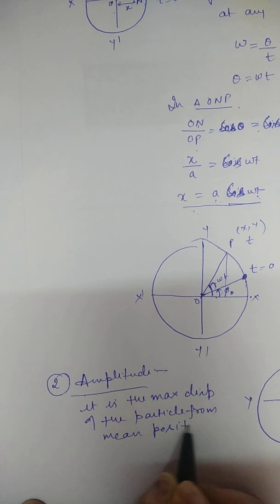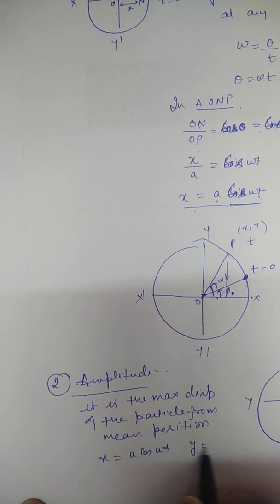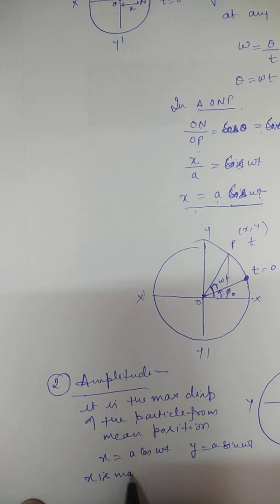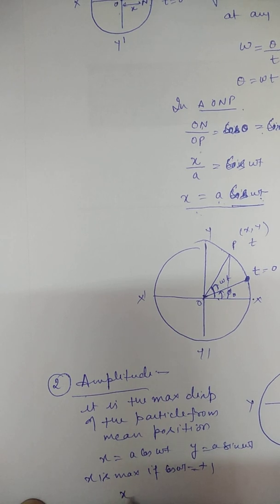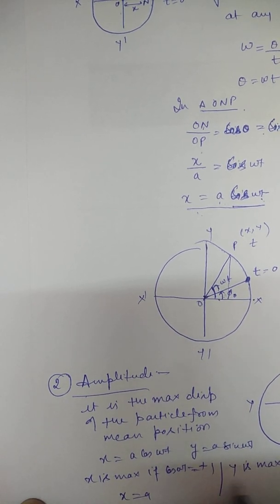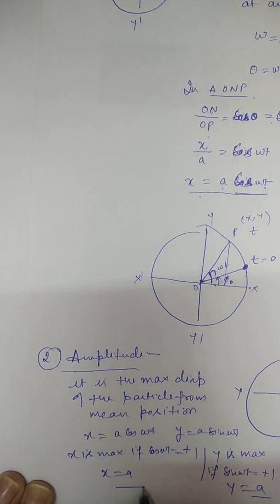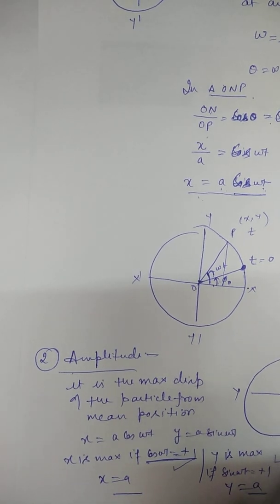For x equals A cos(ωt), x is maximum when cos(ωt) equals its maximum value of plus 1, so x equals A. For y equals A sin(ωt), y is maximum when sin(ωt) equals plus 1, so y equals A. Therefore, A is the amplitude.